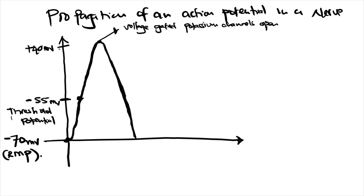The period when the cell membrane potential changes from negative to positive due to sodium entering is called depolarization — you are removing the polarity of the cell. The period where the membrane potential goes back to its original charge is called repolarization, which is the movement of potassium ions outside of the cell.